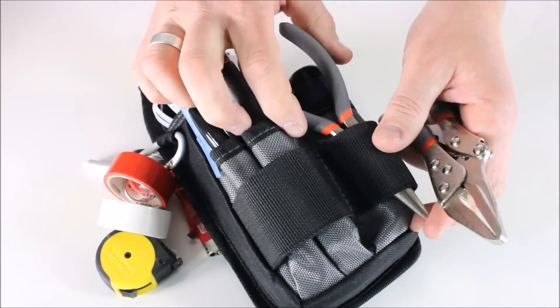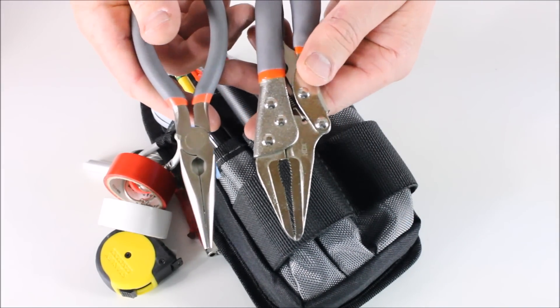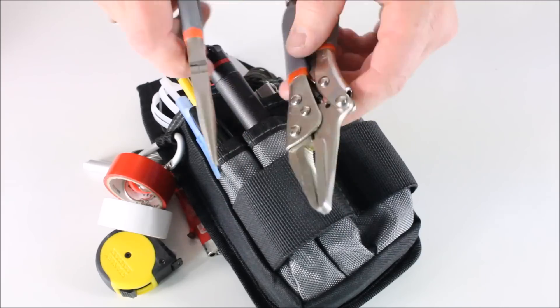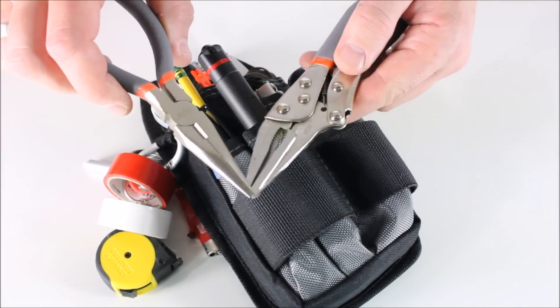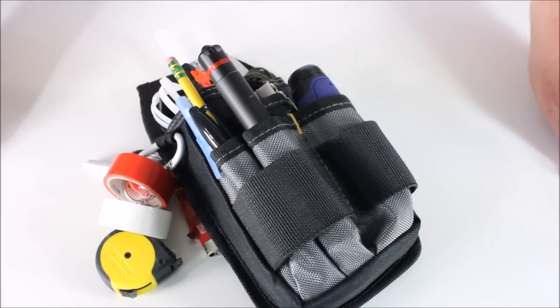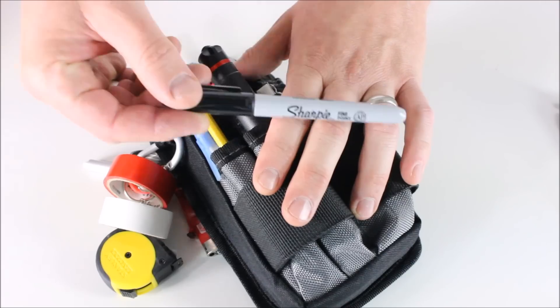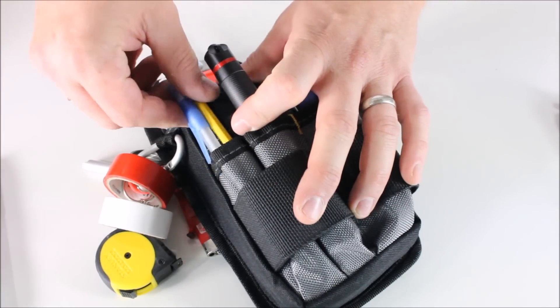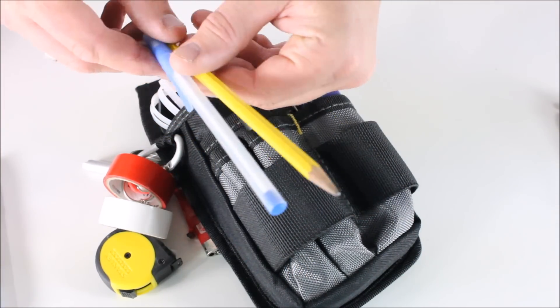Starting on the front, we've got some vice grips and some pliers. Obviously useful kind of in an overlapping way, but also they do some different functions. Sharpie, always like to have a Sharpie with me. Pen and pencil.